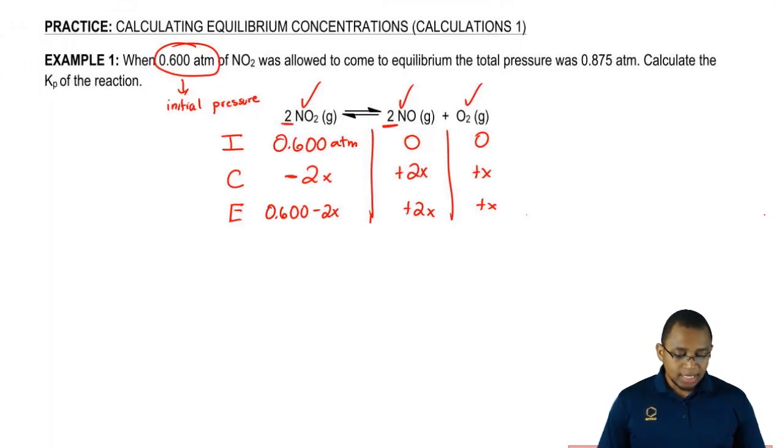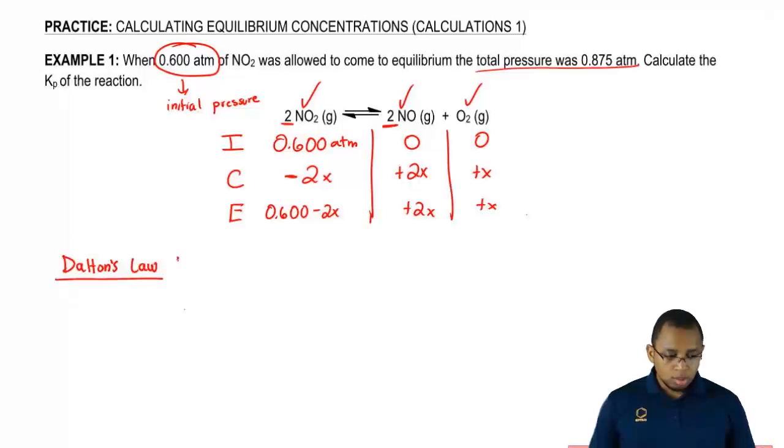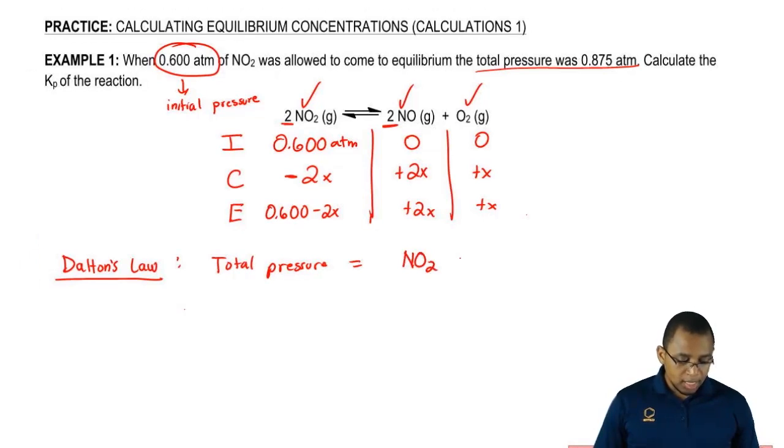Now, what we should realize here is they're telling me what the total pressure is. This goes back to Dalton's Law. Dalton's Law says that the total pressure that we experience is equal to the pressure of all of the gases added up. So my total pressure is equal to the pressure of NO2 plus the pressure of NO plus the pressure of O2.